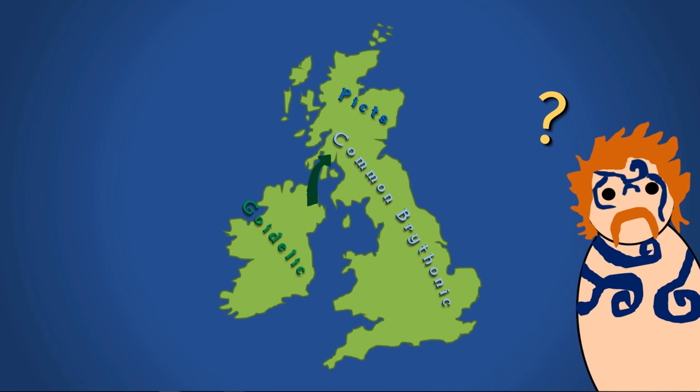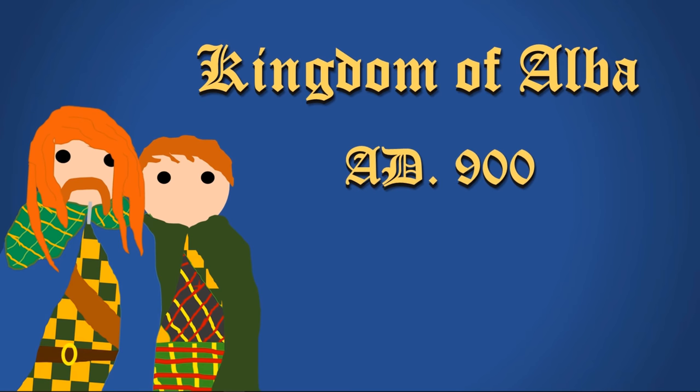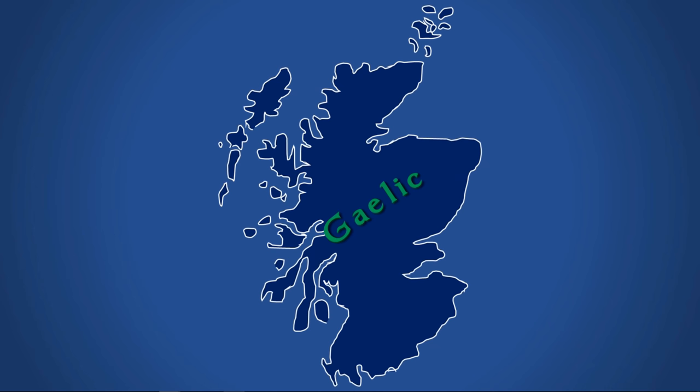In AD 900, the Kingdom of Alba was created under the kingship of Kenneth MacAlpin. It's thought that he probably had roots in both the Pictish and the Dalriadan lines, but it was the Gaelic language that took over. The Pictish language seems to have disappeared completely from Scotland, which is why today some areas of Scotland still speak Gaelic as a first language.